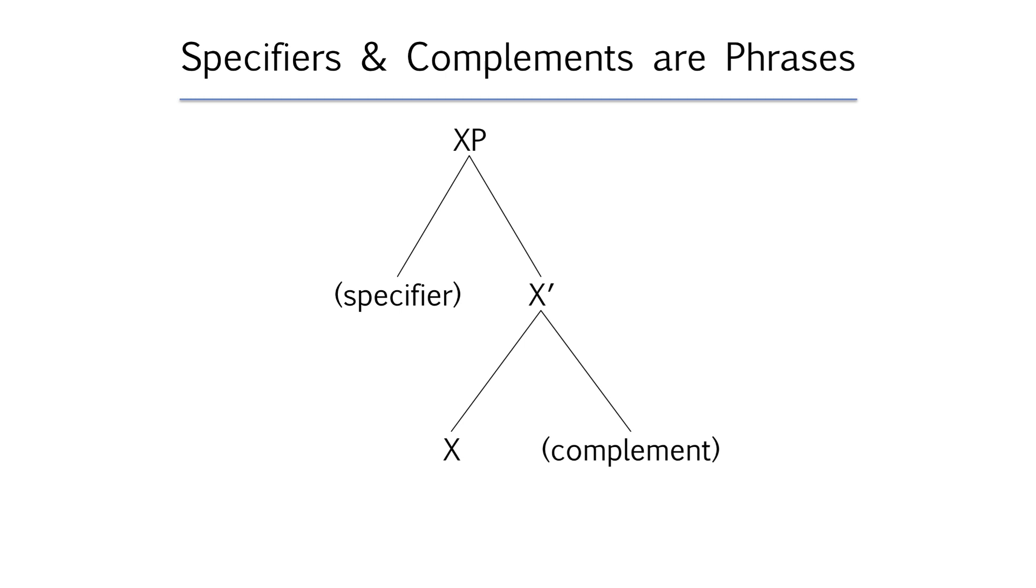The other important thing to know is that the labels, specifier, and complement are the names for positions but any kind of phrase can occupy each position. A complement could be an NP or a DP or a VP or a PP and likewise the specifier position could be occupied by a DP or a CP or a PP. We'll see lots more examples as we go along.